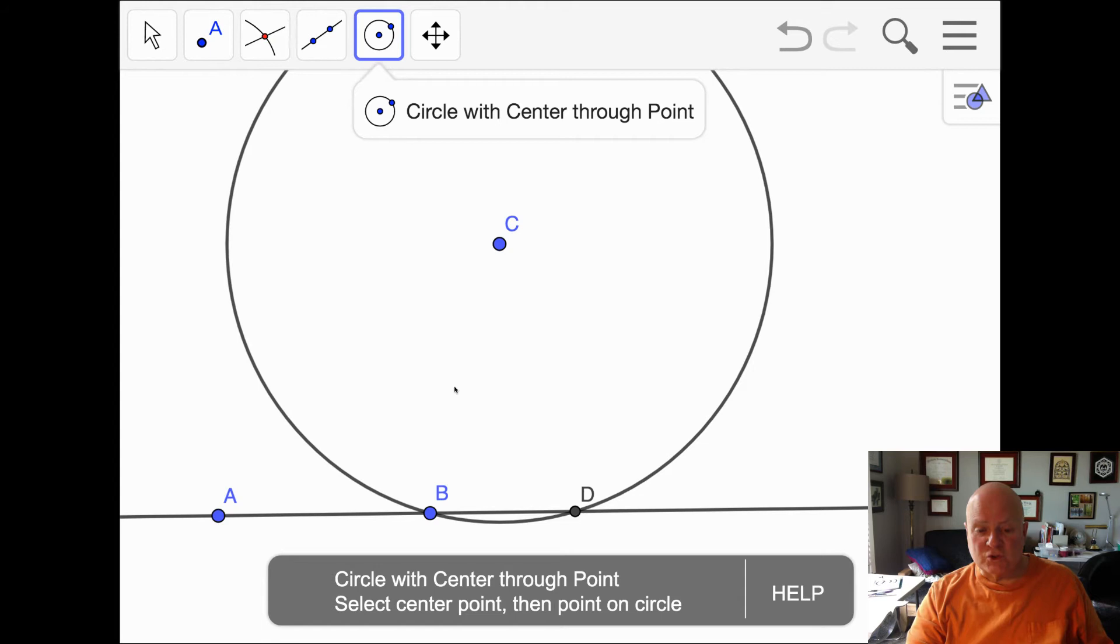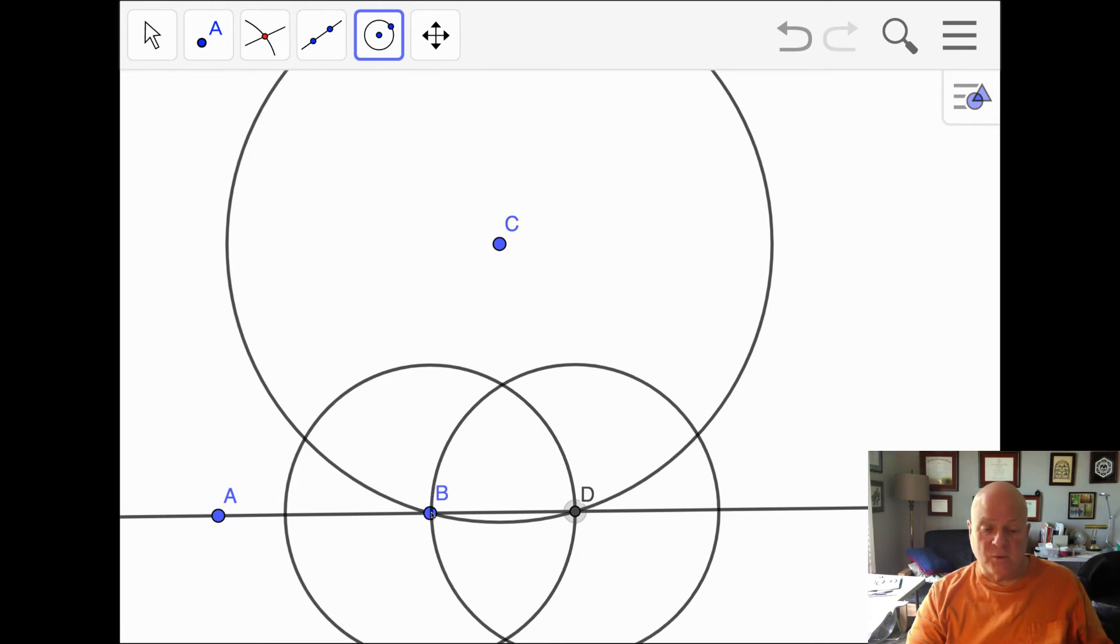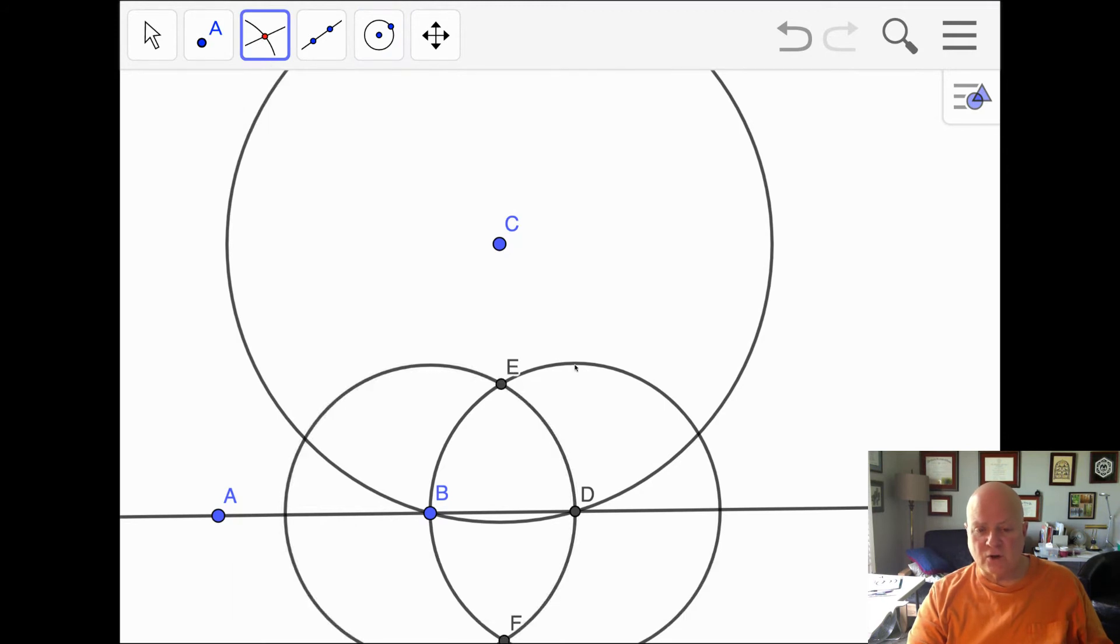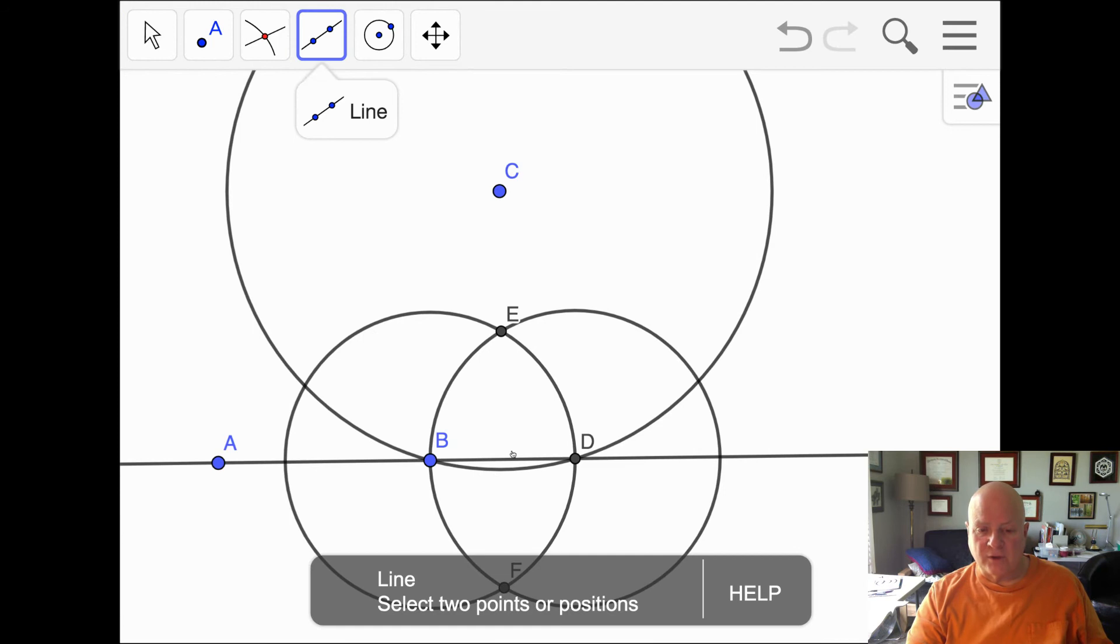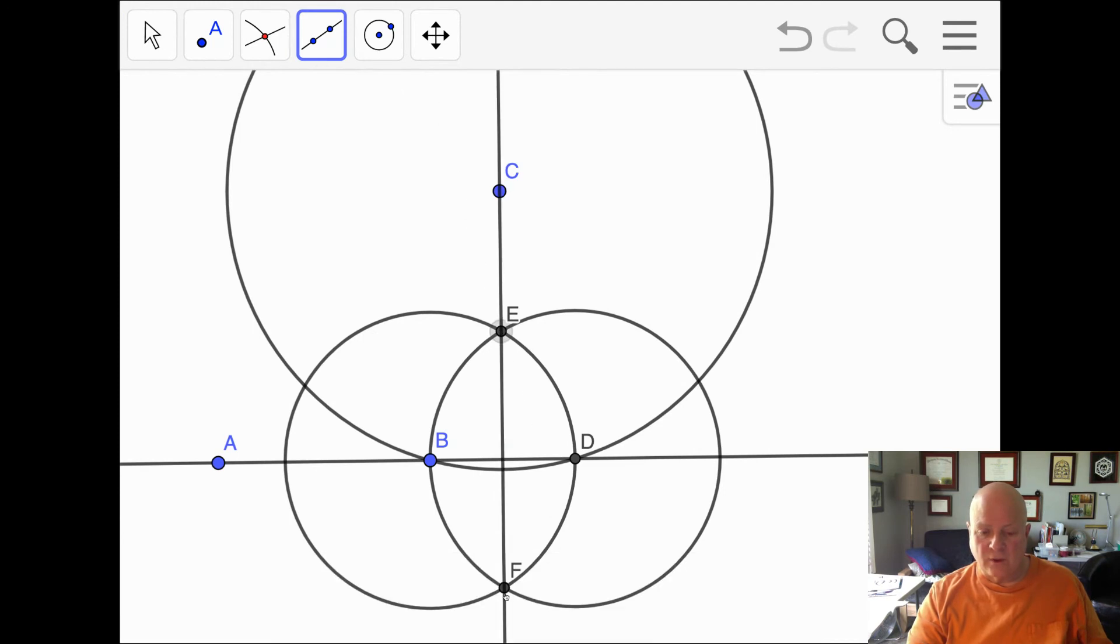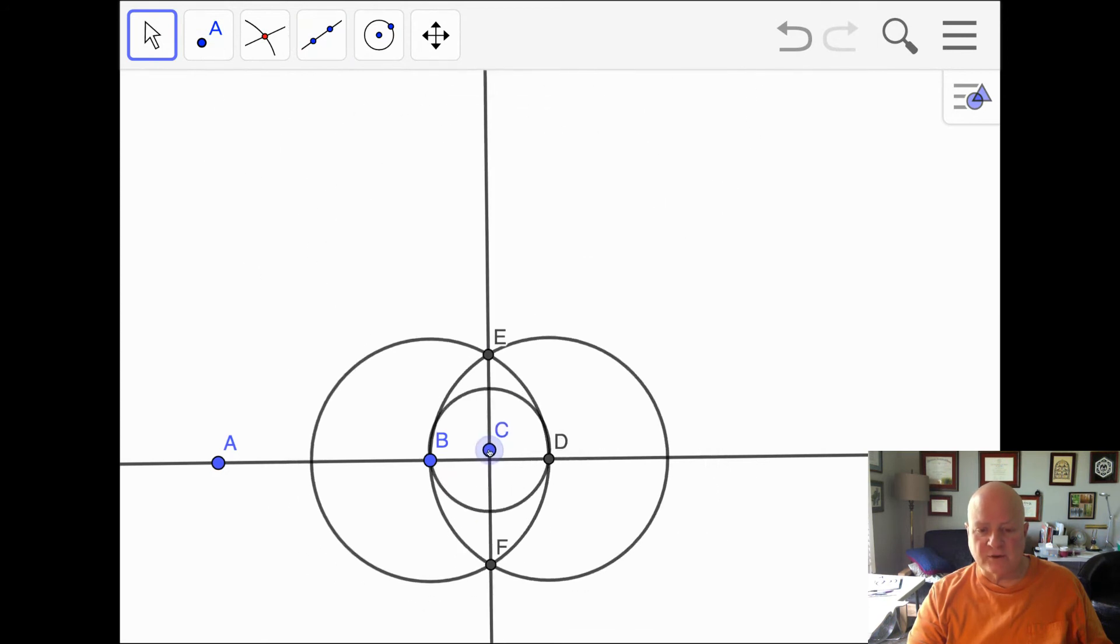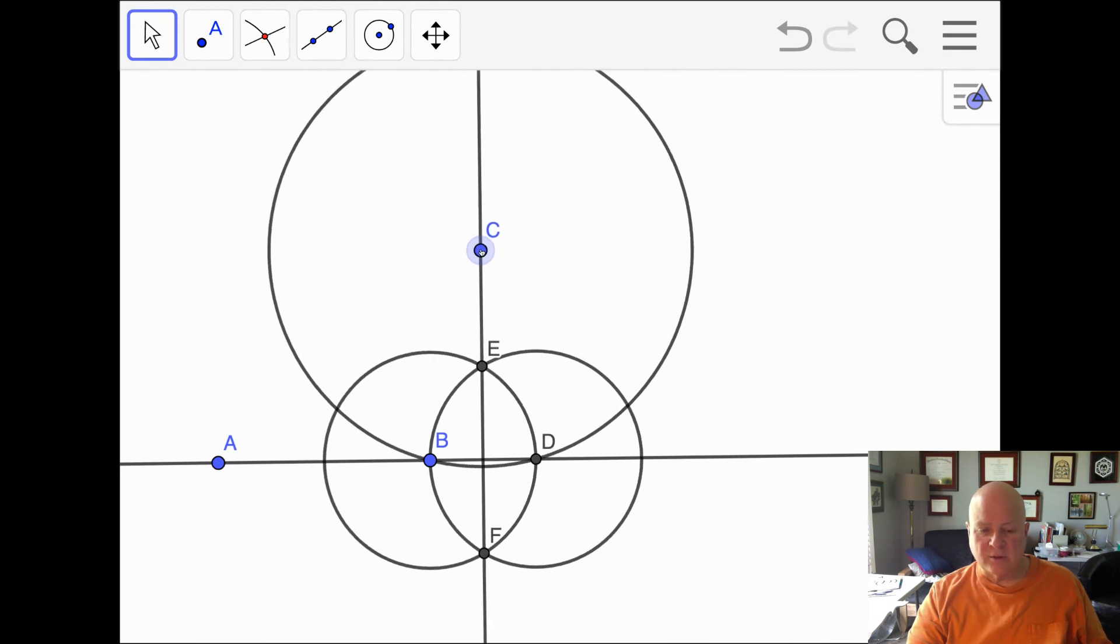Now let's construct that perpendicular bisector because we need that perpendicular line by making a center at B with BD as the radius and center at D with BD as the radius. And when I construct the intersection of these two circles, I get points E and F. Points E and F, I can draw a line through them. I will do that using my line tool. And you'll notice that point C is on the perpendicular bisector. It does not matter where I move this. I can move it left or right. I can move it up or down. And it's still on that perpendicular bisector.